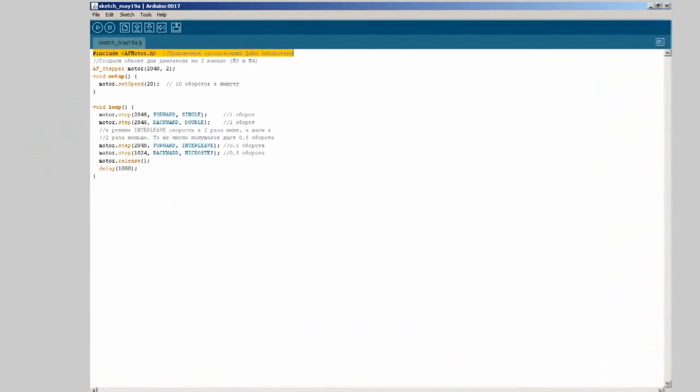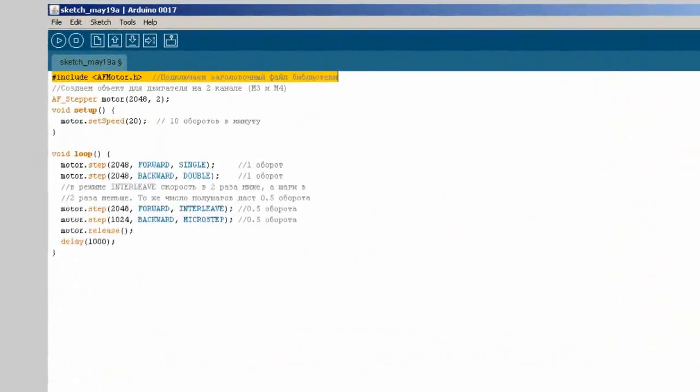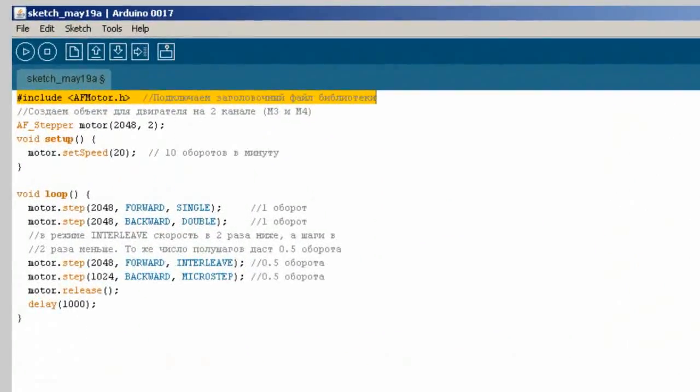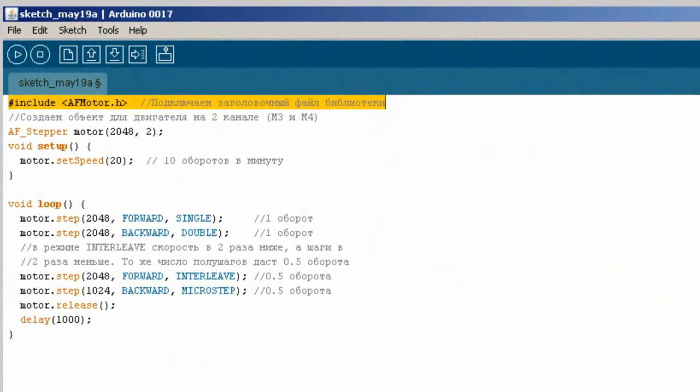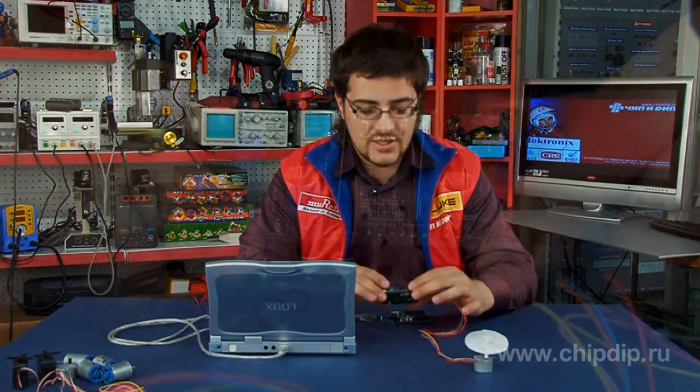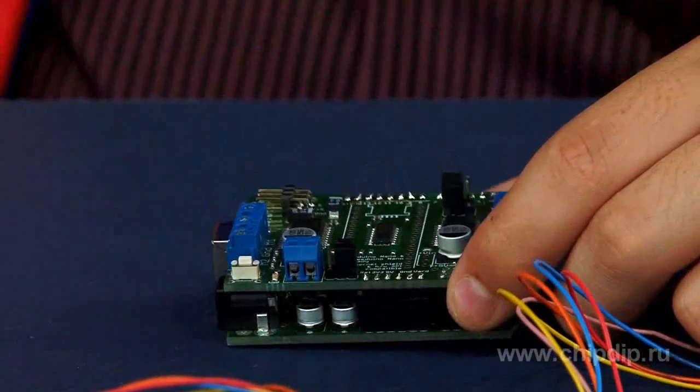Now we have loaded a simple program that controls the stepped motor in various modes and installed it on the Arduino board. Make sure the jumper is in the board feed position. Connect the power supply unit.